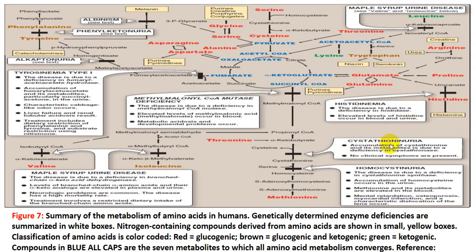Cystathioninuria disease results from accumulation of cystathionine due to deficiency of cystathionase enzyme. This disease presents with no clinical symptoms, making it less apparent but still significant. Homocystinuria results from deficiency of cystathionine synthase enzyme, leading to accumulation of homocysteine and elevated levels of methionine metabolites in the blood.